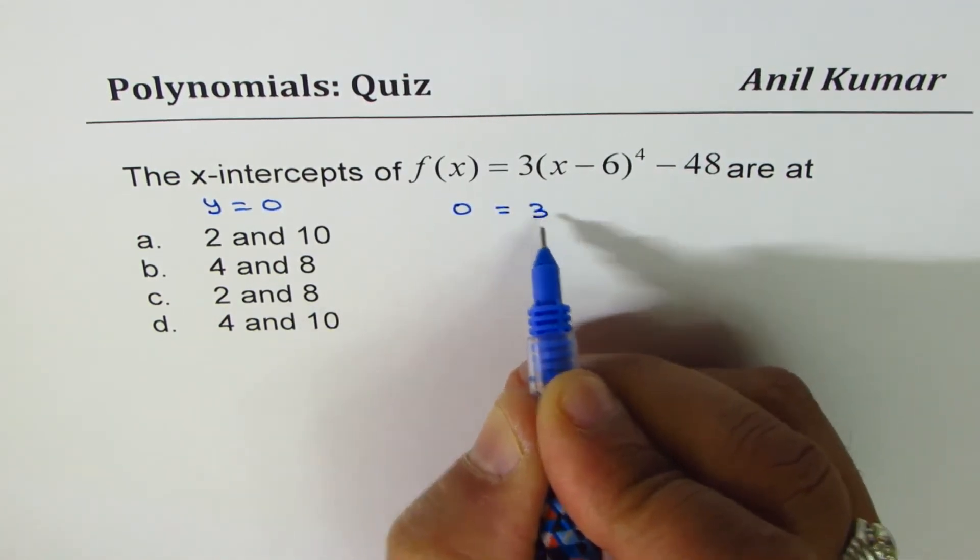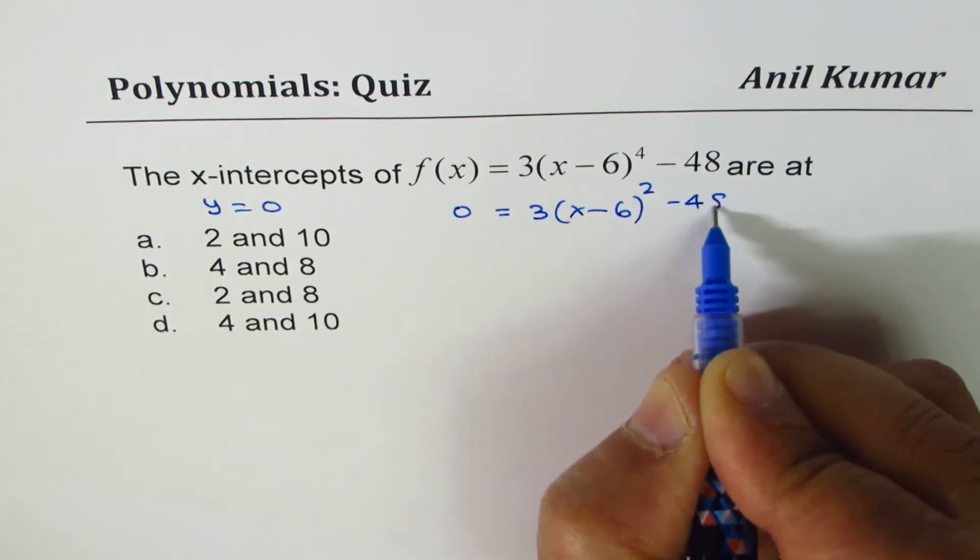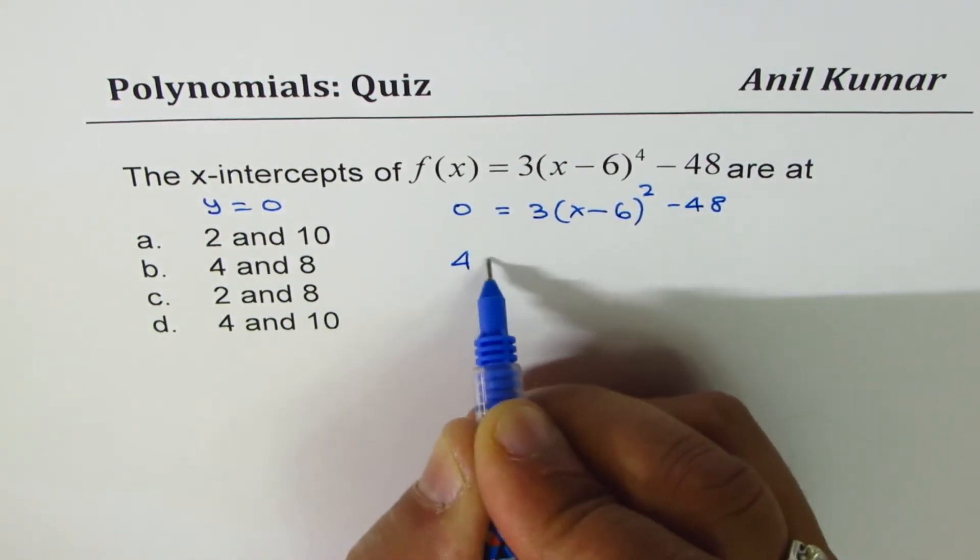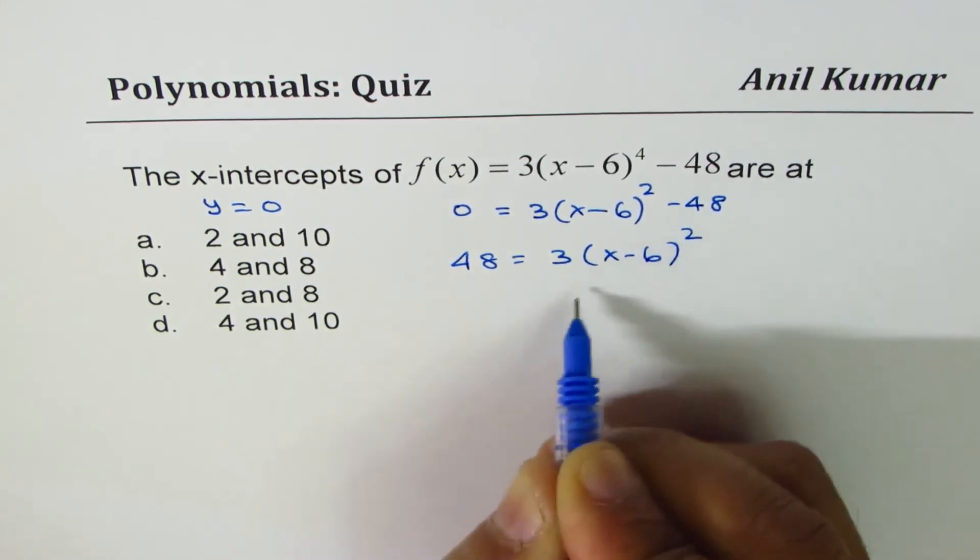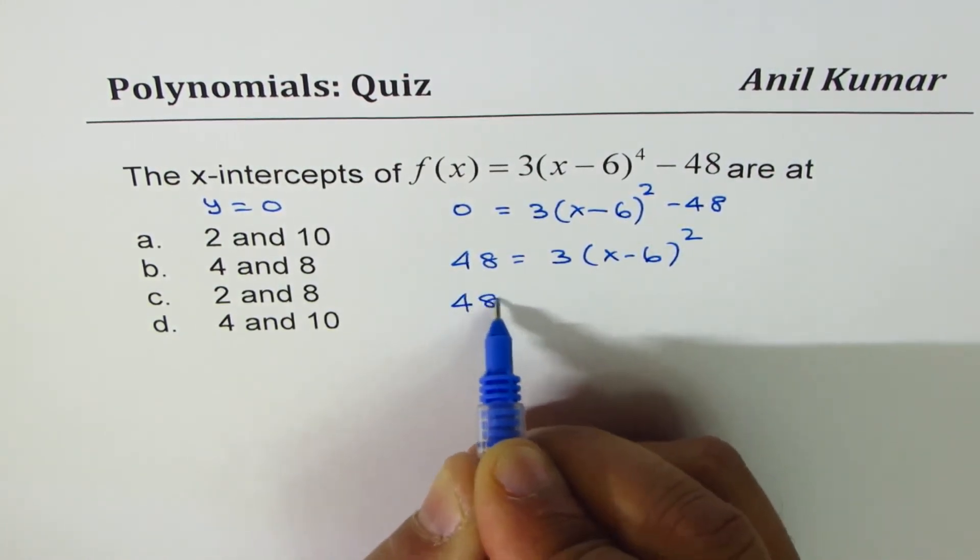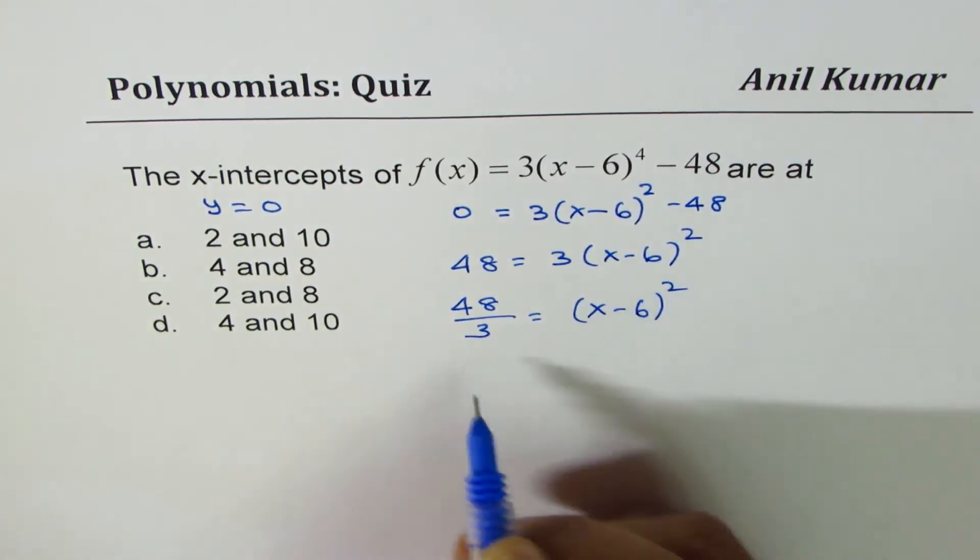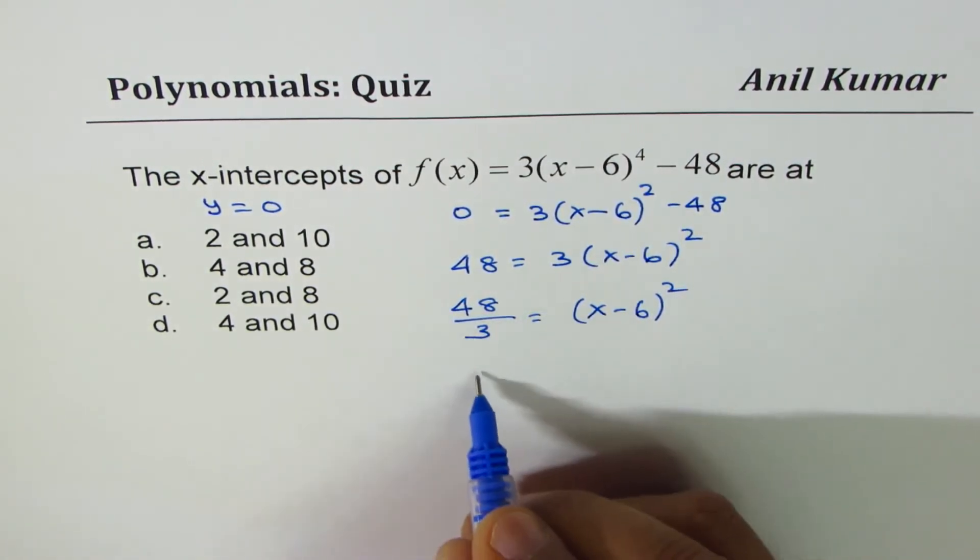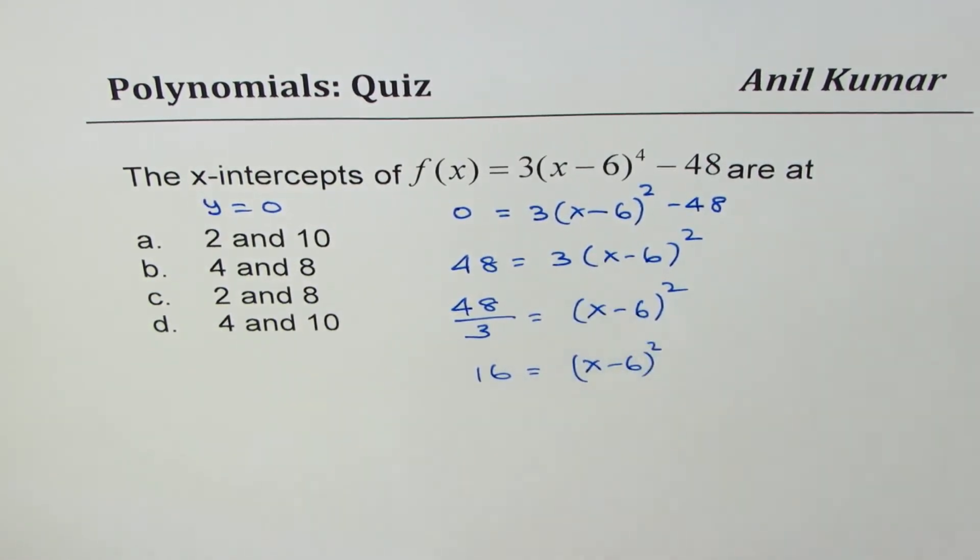And then we have 3(x - 6)⁴ minus 48. Bring 48 to the left side. We get 3(x - 6)⁴. Divide by 3 equals to (x - 6)⁴. That gives you 16 equals to (x - 6)⁴. Square root it.